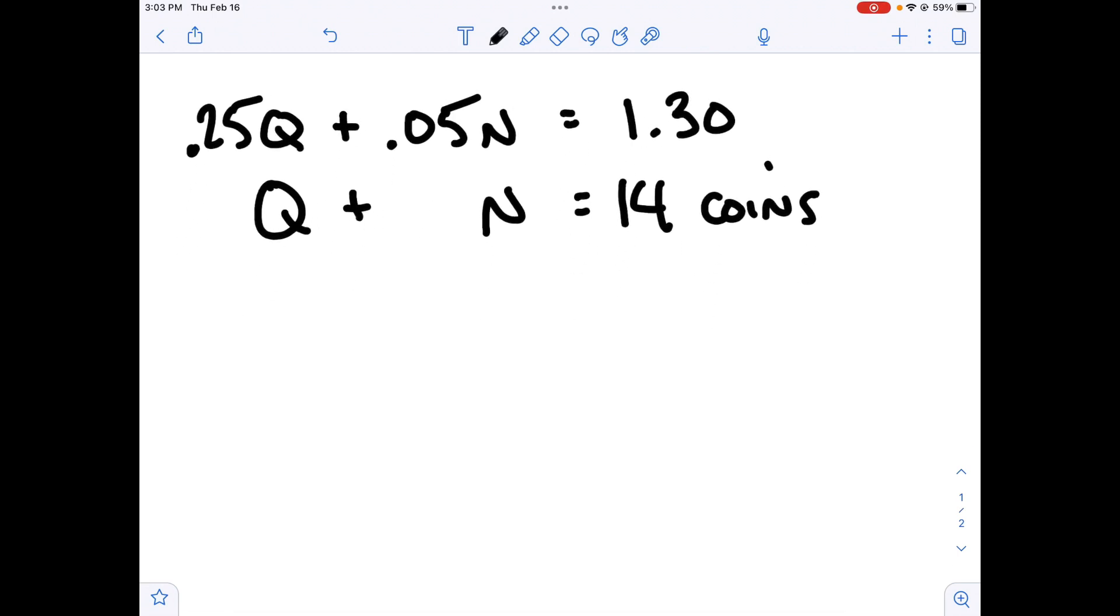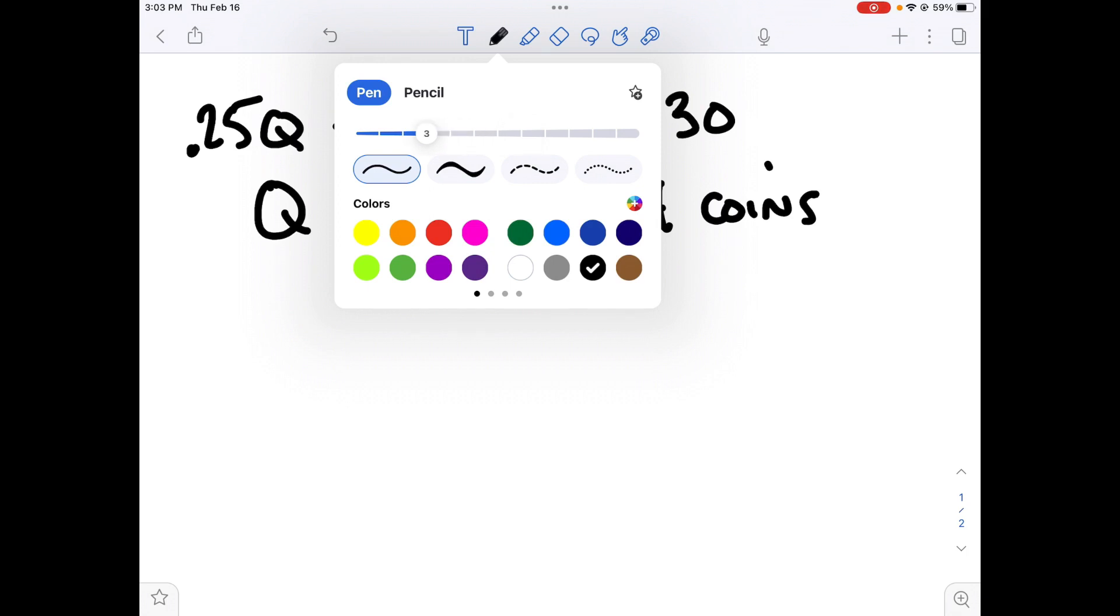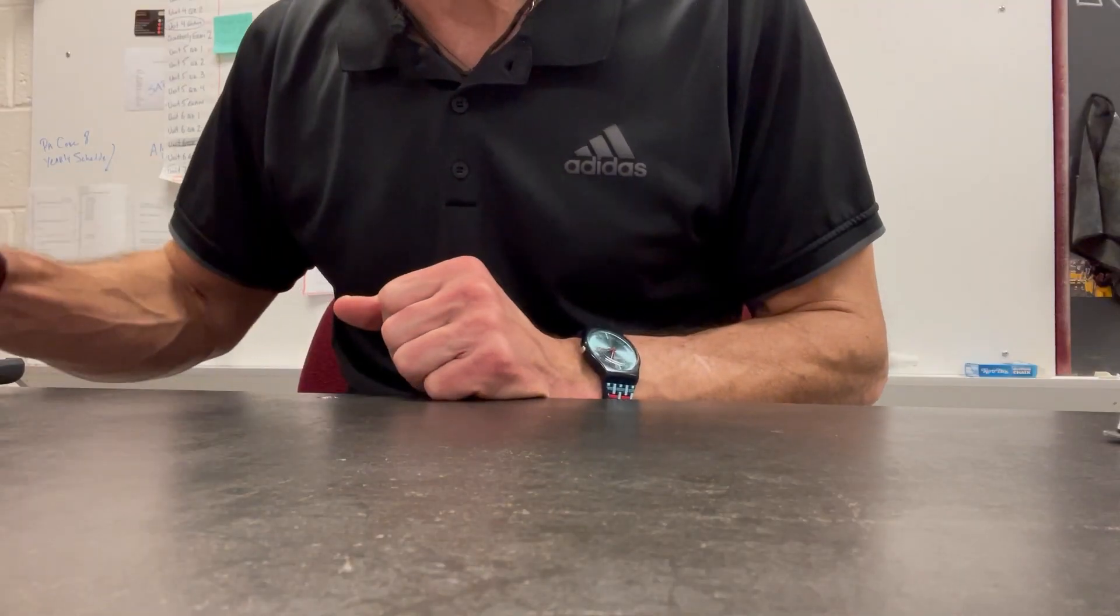If I could solve this system, I'll know Q and N. And to do that, all I'm going to do is get a smaller pen and I'm going to solve this problem using elimination. Now, what I observe is that inside my columns, I have my Qs, my Ns, my equal signs, my numbers all lined up. But I do not have any opposites.